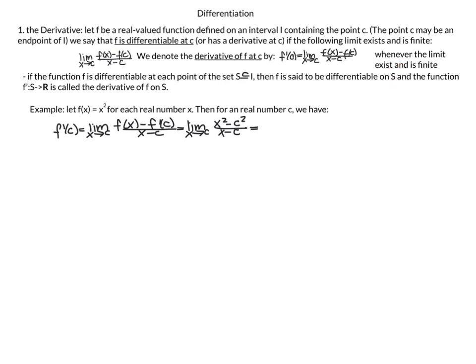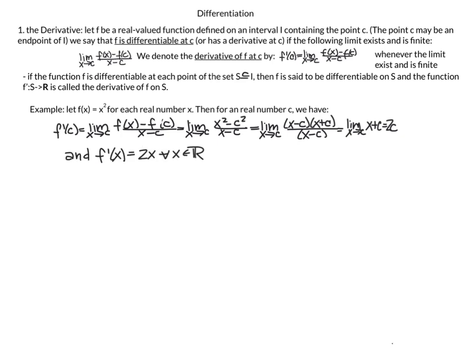Our first example: let f(x) = x² for each real number x. Then for any real number C, f'(C) equals the limit as x approaches C of f(x) minus f(C) over x minus C, which is the limit of x² minus C² over x minus C. Factoring x² minus C² as a difference of two squares, we cancel x minus C, and plugging in x = C gives 2C. Therefore f'(x) = 2x for all x in the real numbers.